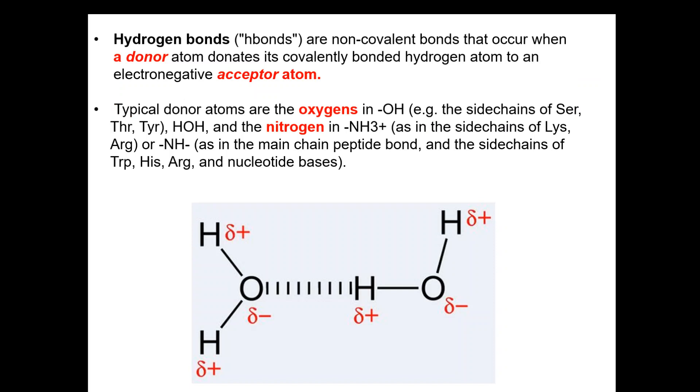By definition, hydrogen bonds are non-covalent bonds that occur when a donor atom donates its covalently bonded hydrogen atom to an electronegative acceptor atom. Let's look at an example with two water molecules. Here we have the oxygen which is more electronegative than hydrogen, so it withdraws electrons to form a partially negative charge and leaves the hydrogen partially positive. This partially positive charge interacts with the partially negative charge to form the hydrogen bond interaction.